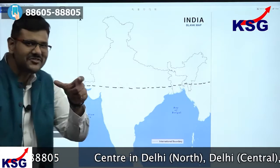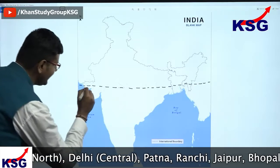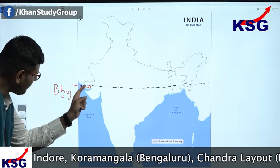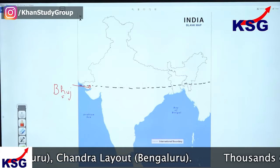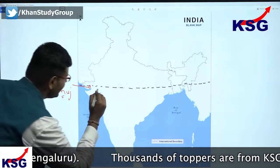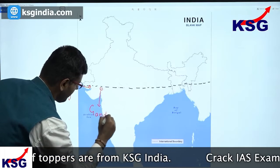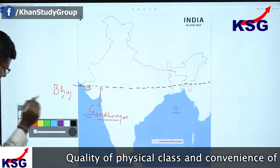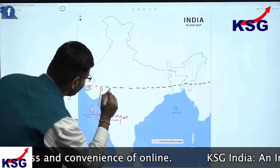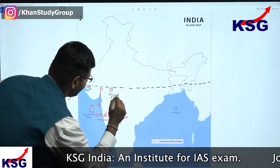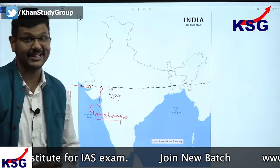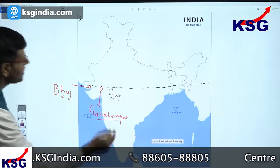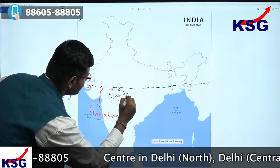Let us look at some districts or cities that might lie around this Tropic of Cancer. I start with the first one — Bhuj — which lies just below the Tropic of Cancer. After Bhuj we have another very important city just below the Tropic of Cancer, and that is Gandhinagar. If Gandhinagar is here, Ahmedabad would not be far away. Then we go to another important place — Ujjain — which is also important for one of the most important temples in Hindu mythology. After Ujjain we have Bhopal, the capital of one of the states.